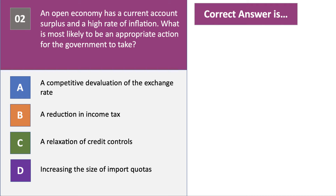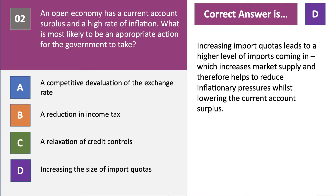Question two: an open economy has a current account surplus and a high rate of inflation. What is most likely to be an appropriate action for the government to take? An open economy trades with exports and imports. It has a current account surplus but high inflation, so you need a deflationary policy. The right answer is D — increasing the size of import quotas.